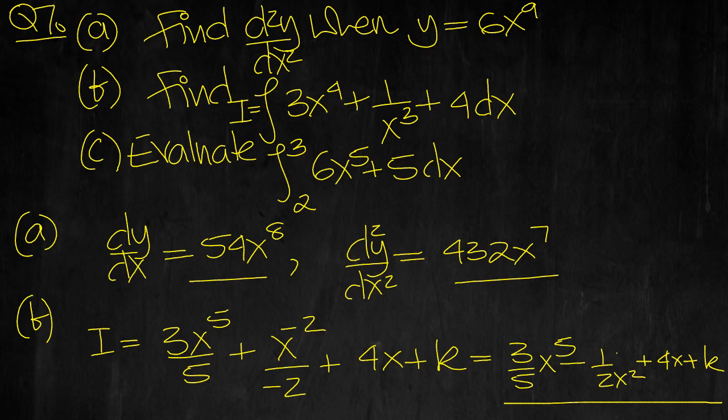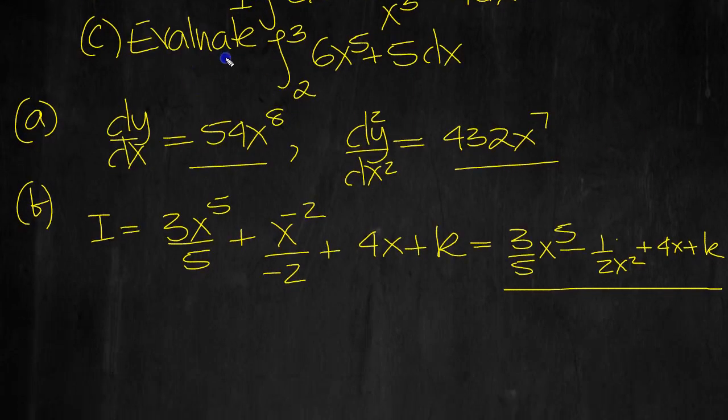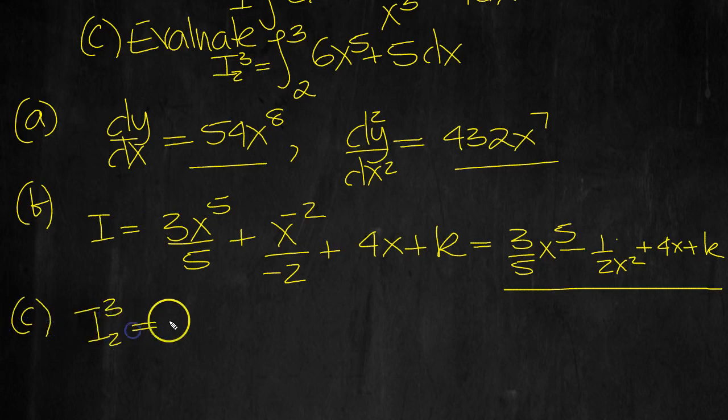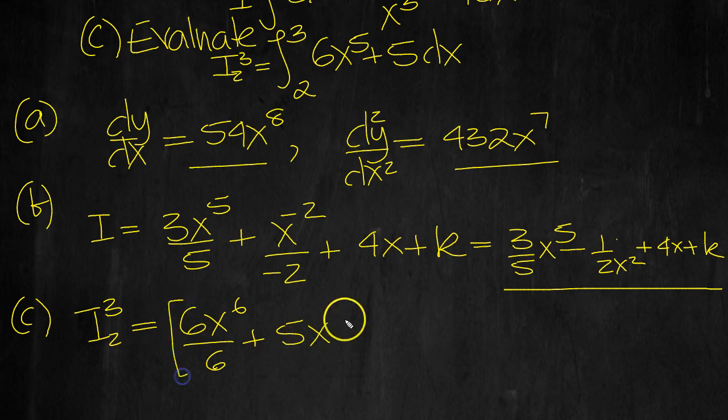Now part C. So I'm going to label this I between 2 and 3, save me writing it again. So I between 2 and 3 is equal to, raise the power by 1, divide by that number, constant integrates to constant times x. It's a definite integral, so we're evaluating that between 2 and 3.